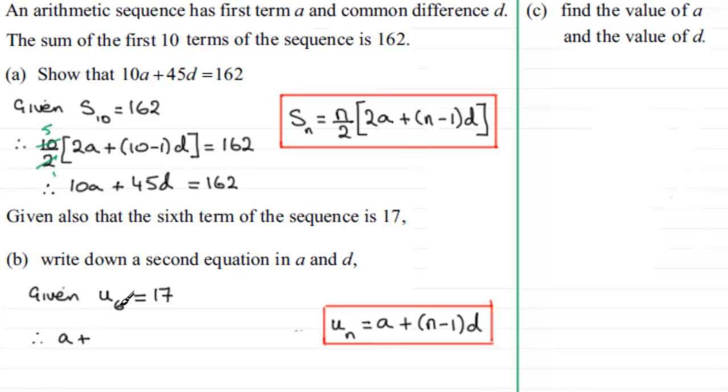So N is 6 here. So 6 minus 1, that's going to be 5, 5D. So we've got plus 5D equals 17. So that's my next equation.